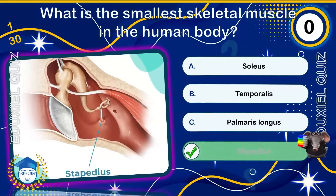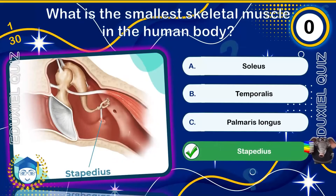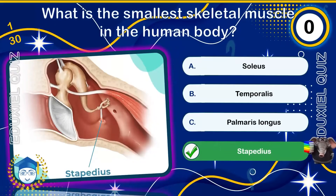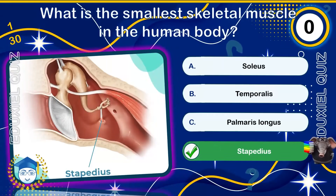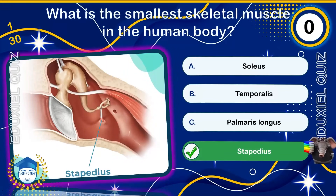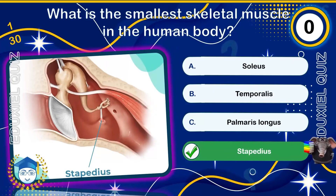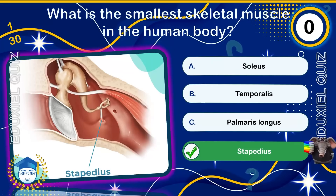The stapedius is the smallest skeletal muscle in the human body, measuring about one millimeter in length. Located in the middle ear, it stabilizes the stapes bone to control sound vibrations. Without it, loud noises would be perceived as painfully amplified.